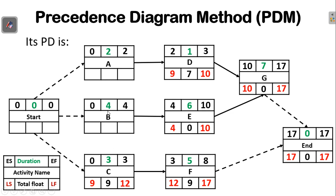For activity B, which is the predecessor of activity E, the late start time of E is 4, and this becomes the late finish time of B. The late start time for activity B is 4 minus 4, giving 0, and the float is 0. For activity A, which is the predecessor of activity D, the late start of D is 9, making that the late finish of A. The late start of A is 9 minus 2, giving 7.